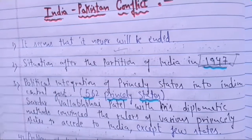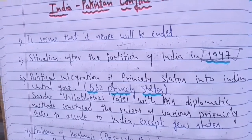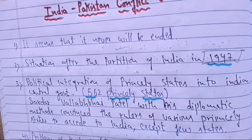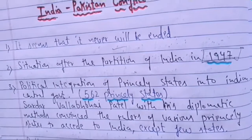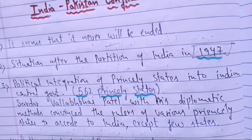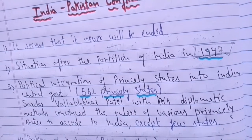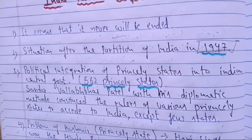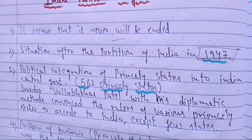As we know, we were a colony under British rule. The British administration had certain states under total British control, but some autonomy was given to a few states called princely states. There were around 562 princely states under British rule, given some autonomy and power for their internal matters. After the partition, we will now talk about Jammu and Kashmir, which was a princely state.